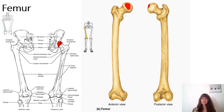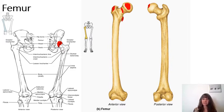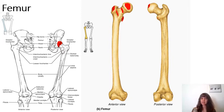Just distal to the head of the femur is the neck of the femur, or femoral neck. Laterally located and distal to the femoral neck we find the greater trochanter. Medially and distally located to the greater trochanter is the lesser trochanter. These pieces of bone stick out because of strong muscular attachment, which causes them to become more prominent. In between the two trochanters is the intertrochanteric line. On the posterior aspect between the two trochanters we have the intertrochanteric crest.